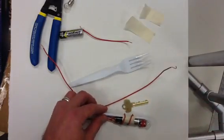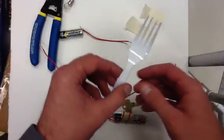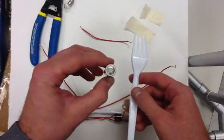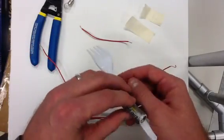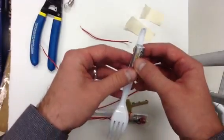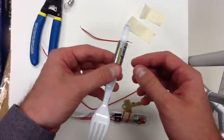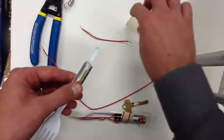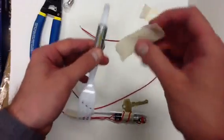The first step is to take your plastic fork and take your battery, and take the negative end of the battery and put it face up, or towards the bottom end of the fork, and then tape it to the fork.